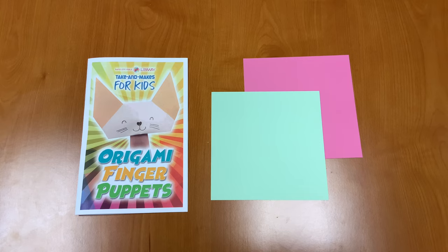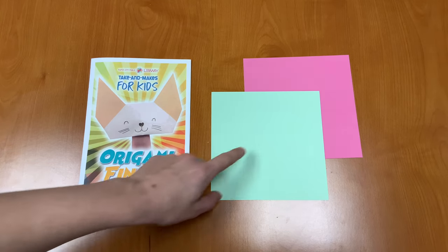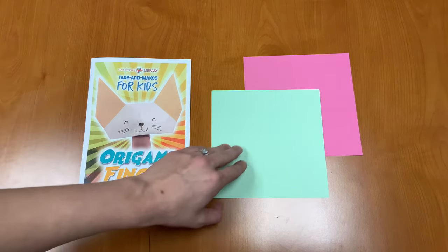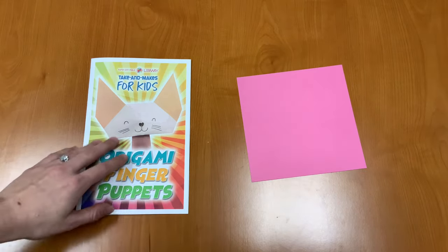Let's go ahead and get started and take a look at what we have in our Take and Make kits. In your Take and Make kit you'll have your instruction booklet and two pieces of origami paper. Let's get started.